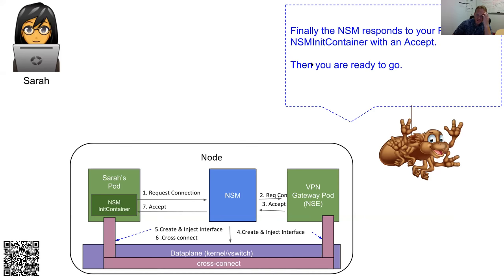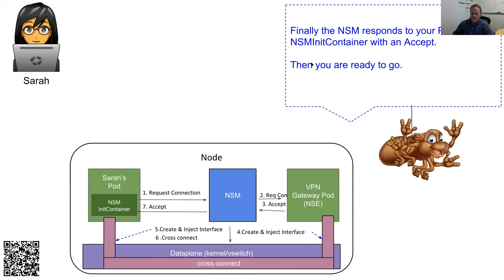If the VPN gateway pod is on the same node: it sends back an accept connection over gRPC, and the Network Service Manager creates and injects the interface — whatever mechanism — into the pod from the data plane, injects the interface into Sarah's pod, and cross-connects them. It's a very simple cross-connect. The init container is just like any init container — it dies shortly after Sarah's pod comes up. If Sarah wanted an ultra-smart pod that dynamically requested connections throughout its lifetime, she could, but for this use case that's unnecessary.